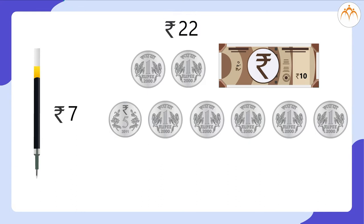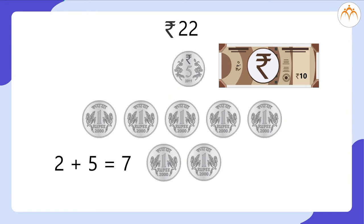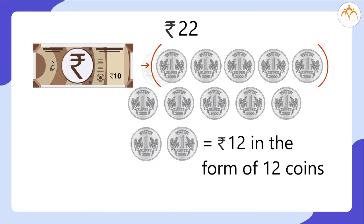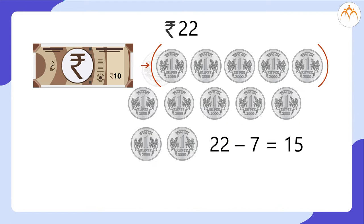Now I have 22 rupees in the form of one note of 10 rupees, one coin of 5 rupees, and 2 plus 5 equals 7 coins of 1 rupee each — that is 12 rupees in the form of 12 coins of 1 rupee each. Out of these 12 coins, I gave 7 coins and the money left with me was 22 minus 7 equals 15 rupees.